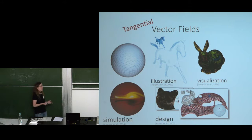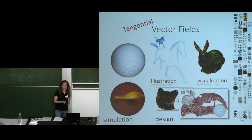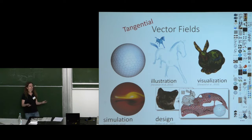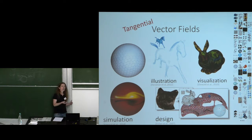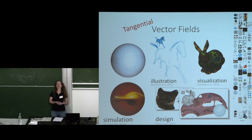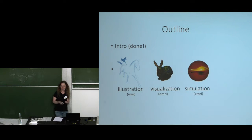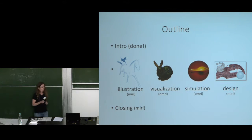The goal of this tutorial is to talk about these four applications. There are many, many other things you can do with vector fields and this tutorial is not meant to be all-inclusive. Our goal is to show you these things and maybe get you excited about working with vector fields, and we've tried to make this accessible to graduate students. The plan for the next hour and a half: I'll show the pen and ink illustration application, then Omri and I will switch and talk about visualization and simulation, and finally I'll talk about vector field design.